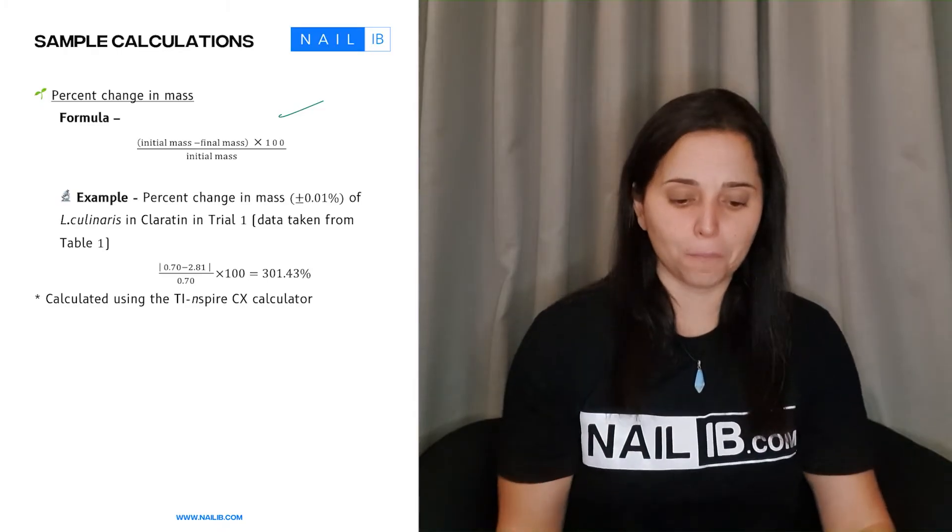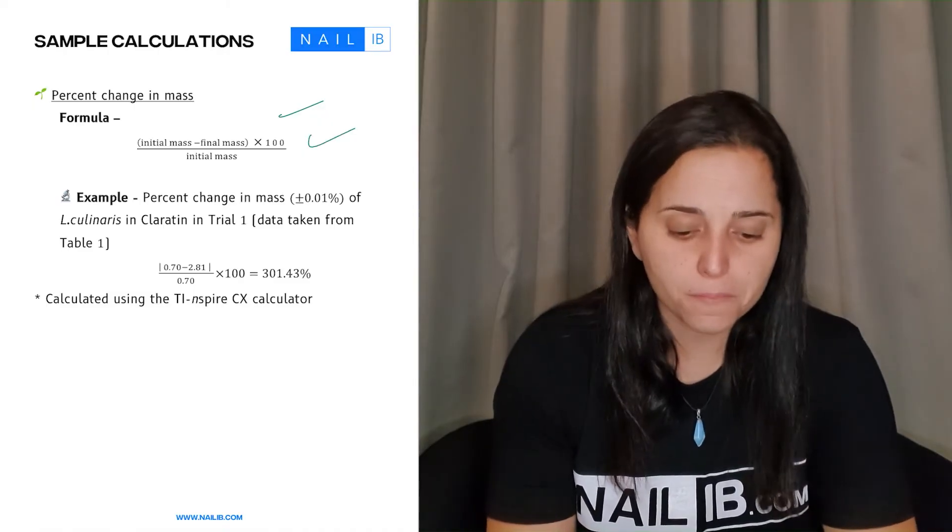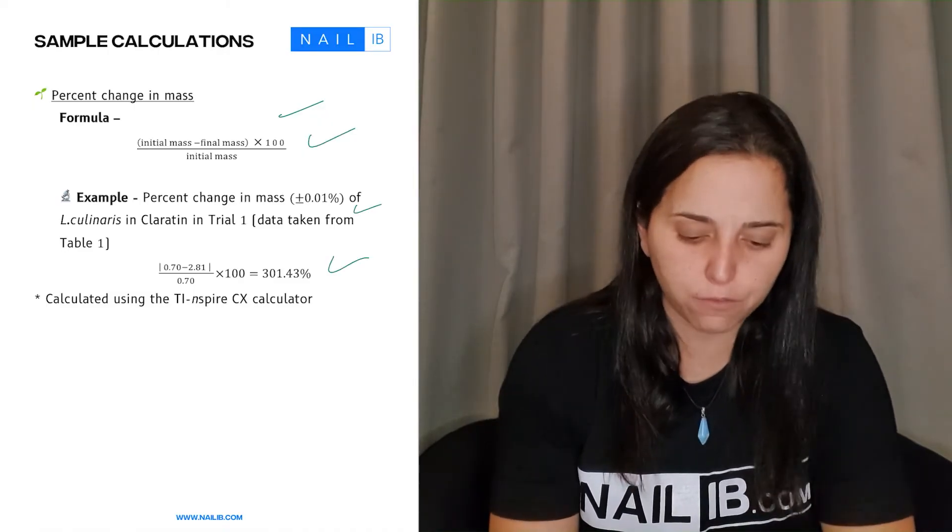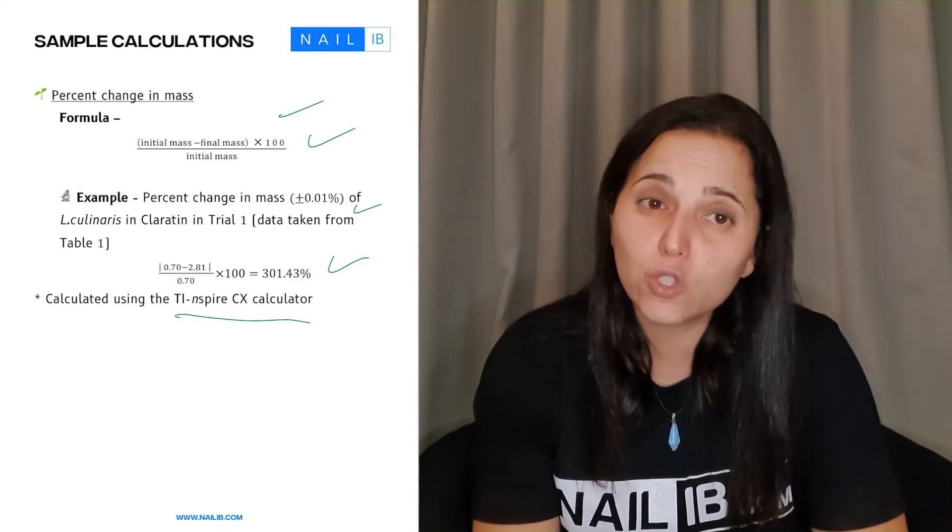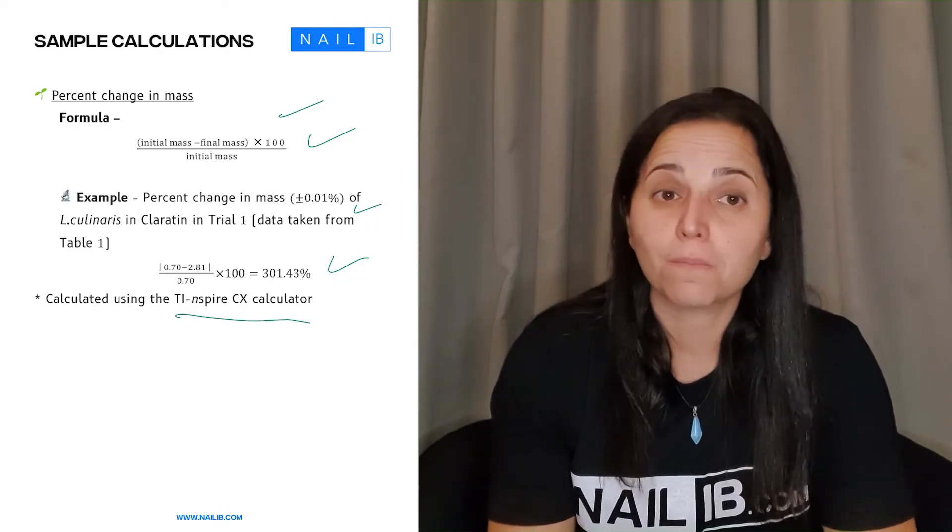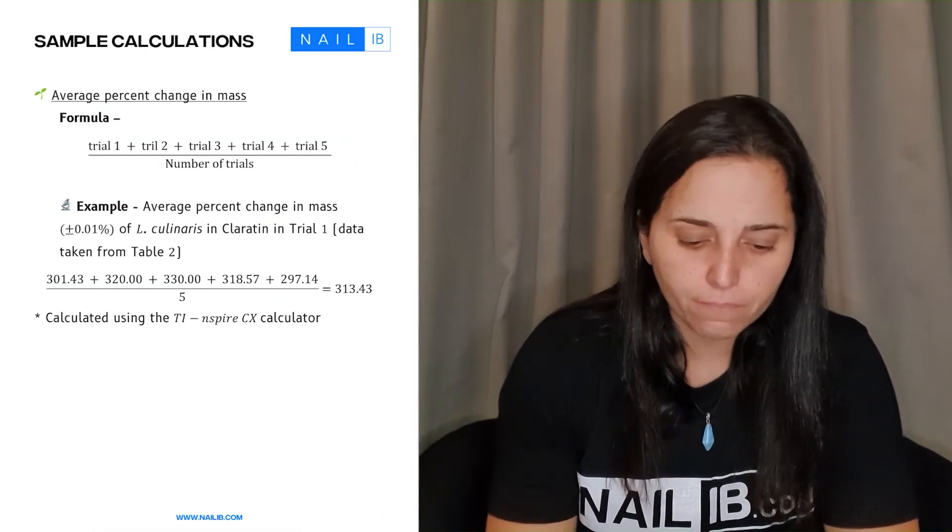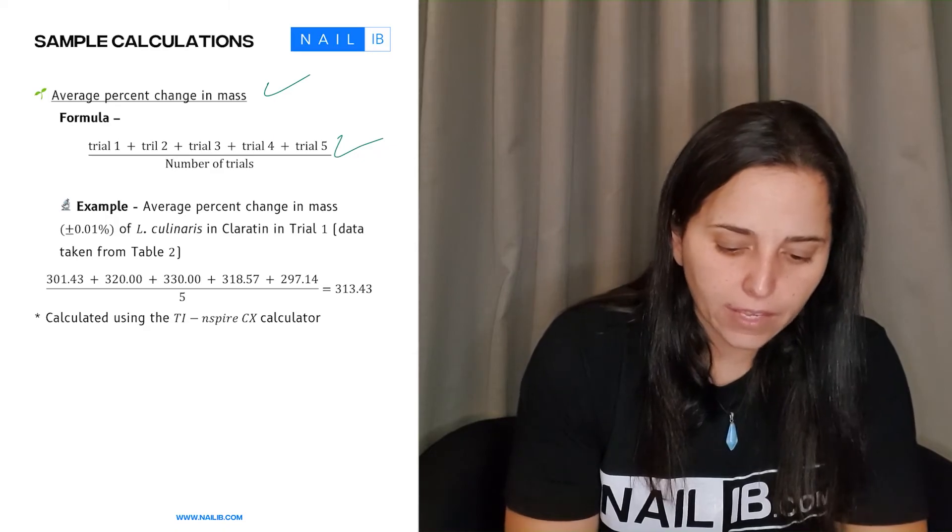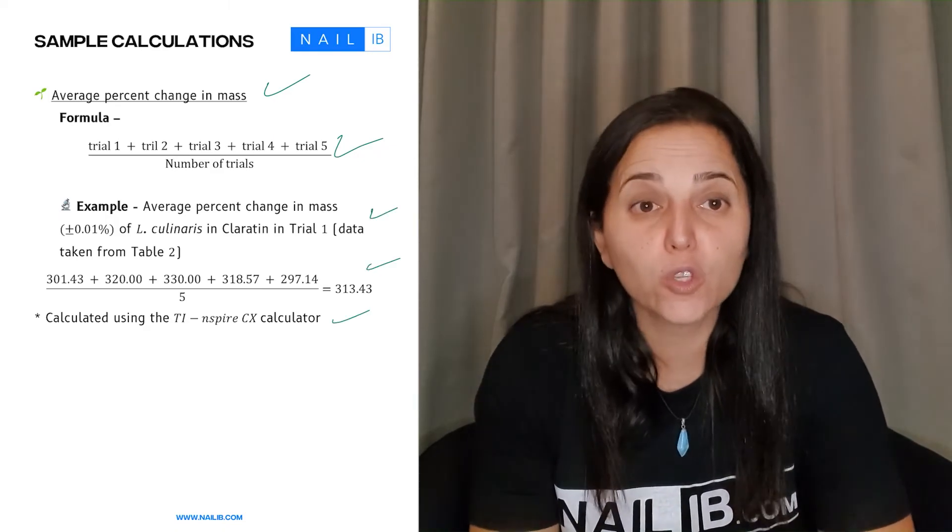Now here's an example of showing a paper. The kid put the formula, then he explained a little bit what he's doing with the formula, then he applied the formula and he says calculating using whatever the calculator. You can do this, or sometimes you can even say using the Excel sheet and then have the data in the Excel sheet. That's totally fine. Here is the average percent mass. He took the formula and then he explained a bit and then he applied the formula and put the calculations. You can do that.